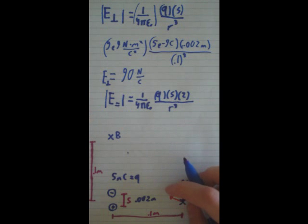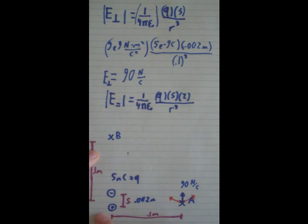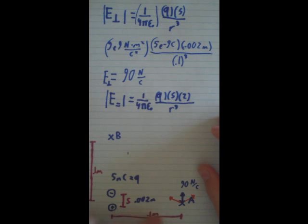But remember, it only works because these happen to be the same distances away. This happens to be 0.1 meter and this happens to be 0.1 meter. If this was shorter, like 0.05 meters, it would be a different number. But since these are the same distances away, it'll just be times 2.